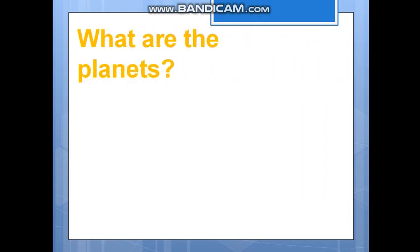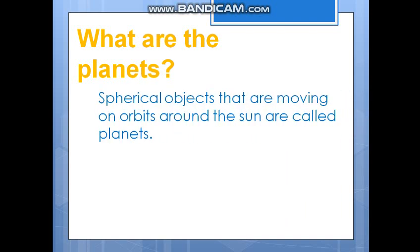Now we will discuss about the planets. Look at here. Spherical objects that are moving on orbits around the Sun are called planets. Planets are spherical objects, and they are moving on orbits around the Sun.